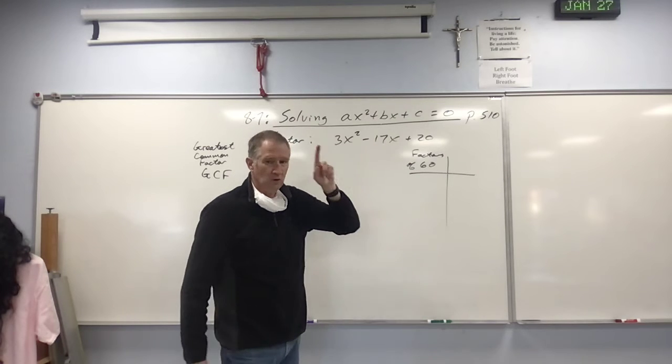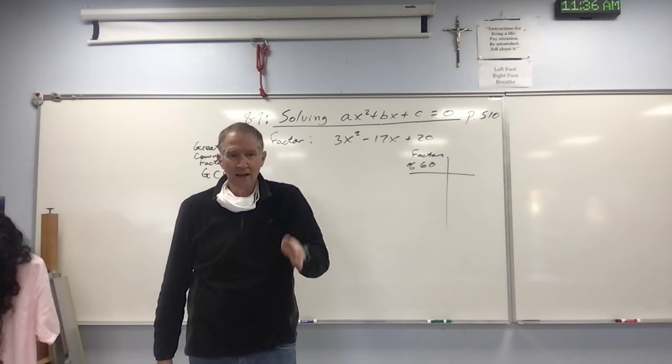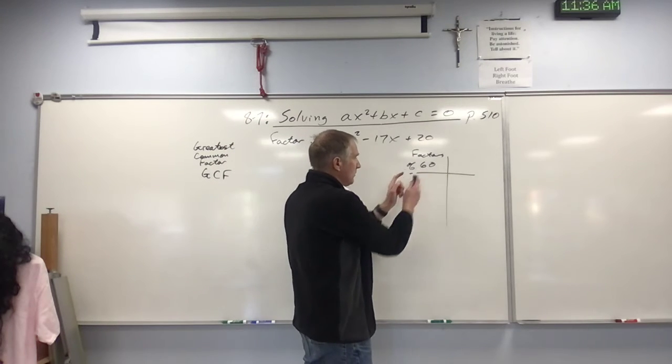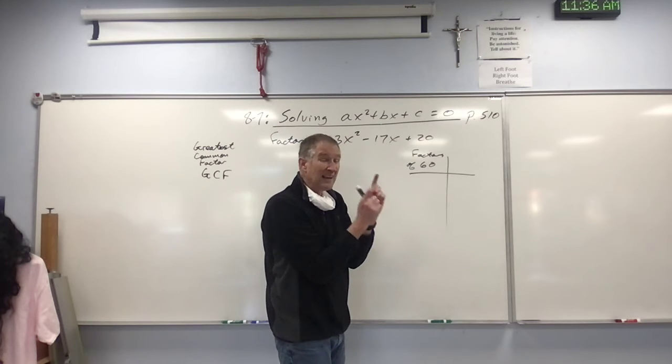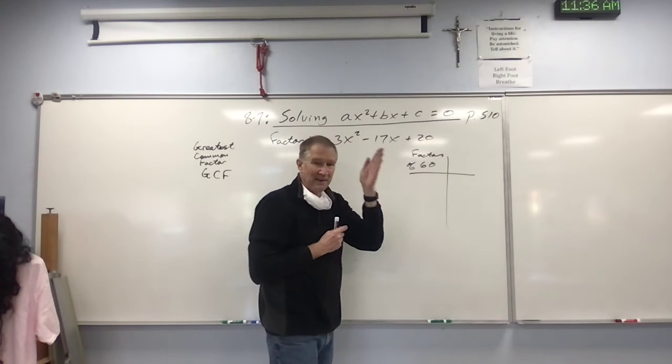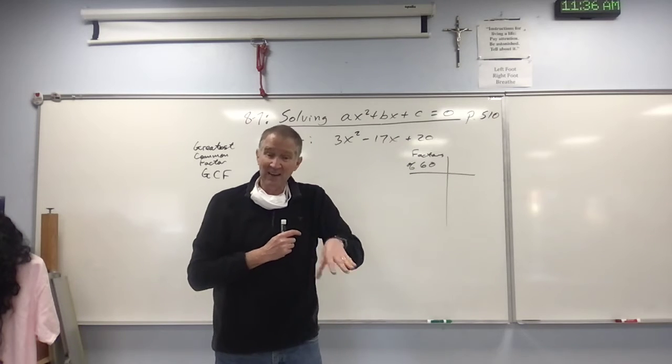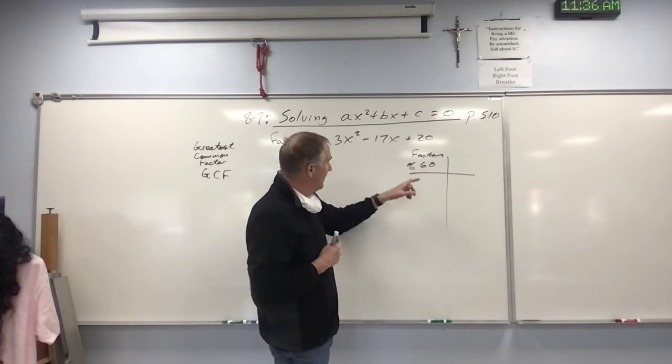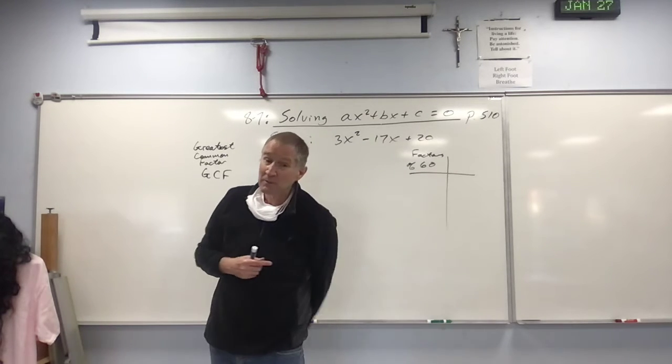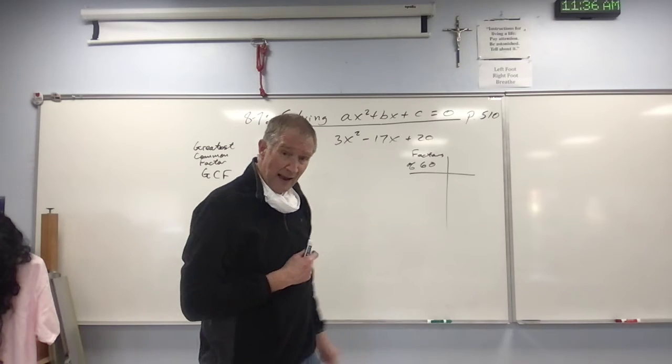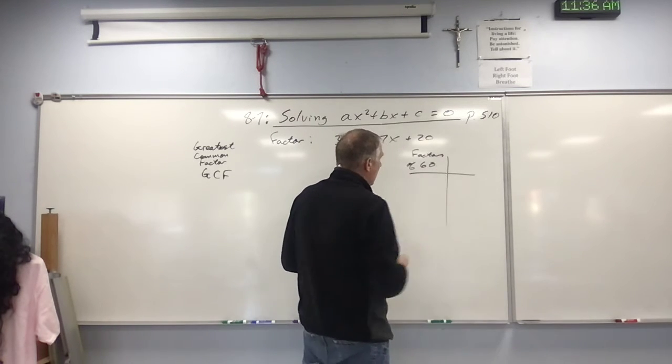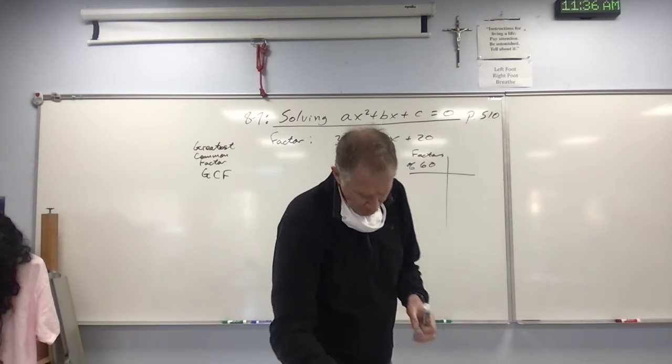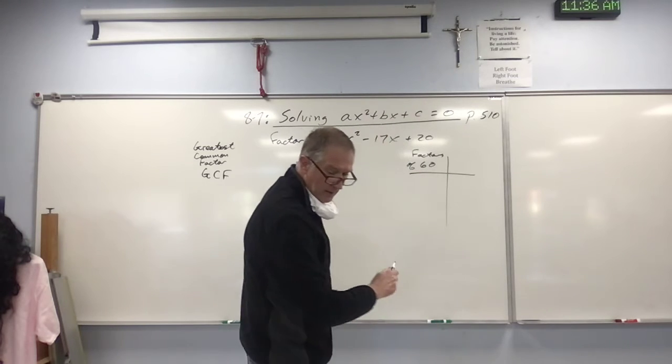Which means that your factors are going to be negative. What two things that are factors of 60, a positive 60, multiply together to give you positive 60 but add up to negative 17? They have to have the same sign, because negative times negative is positive and positive times positive is positive. But they have to add up to a negative number, so they have to be negative, both of them. What factors of 60 add up to negative 17?